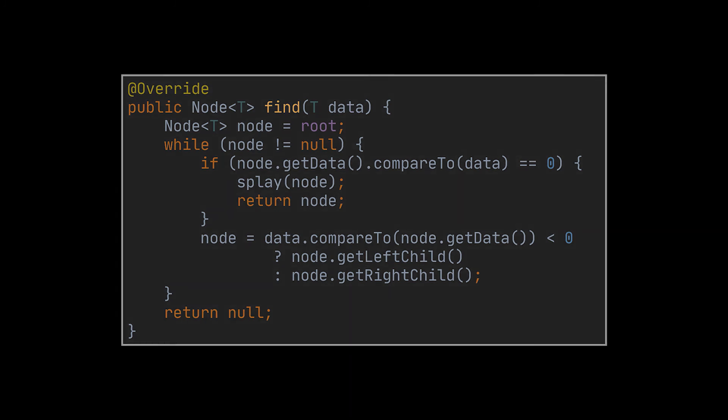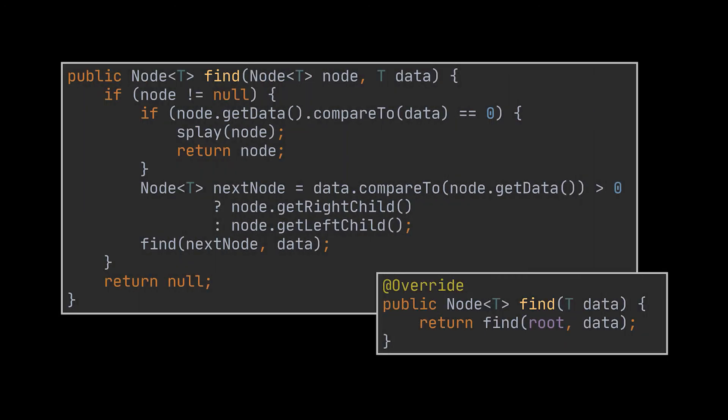There is also a way to implement the find method recursively. You just replace the while loop with an if statement and move the logic to a recursive method. After identifying the next node to hop to in the tree traversal, that node is passed to the recursive method, replicating the same behavior as the while loop.